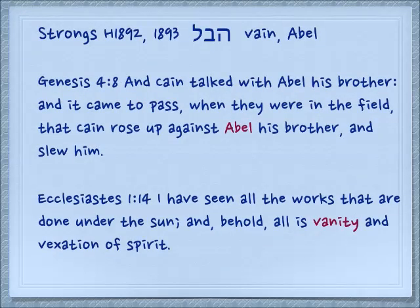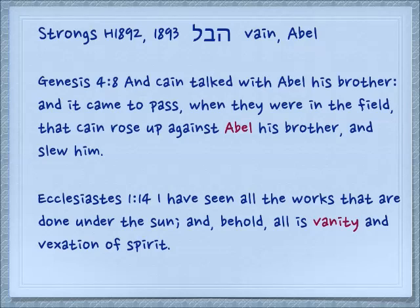Also this name — Hevel. Genesis 4:8: 'And Cain talked with Abel his brother. And it came to pass when they were in the field that Cain rose up against Abel his brother and slew him.' Ecclesiastes 1:14: 'I have seen all the works that are done under the sun, and behold, all is vanity and vexation of spirit.' The concept behind Hevel is just a breath of air, a puff of air, and that is what vanity is. All the time you spend trying to do things for your external — those things are in vain because they will pass away. And Abel's life was like just a puff of air; he was here and then he was gone.